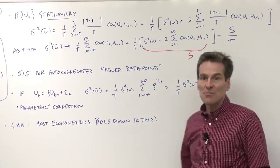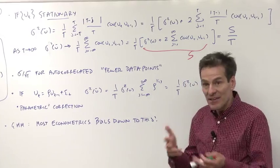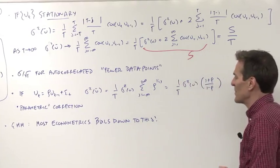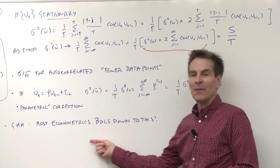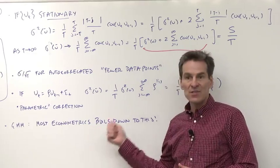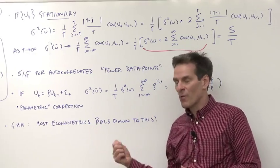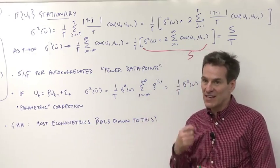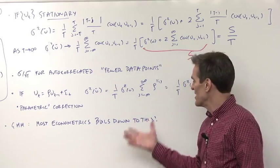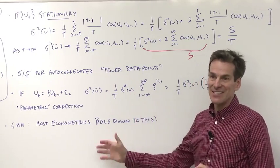So this looks small. I've reminded you what the sample mean is. I've reminded you how you calculate the variance of the sample mean. The beauty of GMM is that most econometrics that we will do in asset pricing, including what looks like very complicated things, instrumental variables, non-linear estimation, and so forth, just boils down to this.